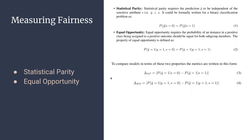The fairness metrics used are statistical parity and equal opportunity. Measuring fairness can be contradicting, so there is no single agreed-upon measure. Statistical parity means the prediction should be independent of the sensitive attribute: P(Ŷ | S=0) = P(Ŷ | S=1). Equal opportunity is more specific to positives: P(Ŷ=1 | Y=1, S=0) = P(Ŷ=1 | Y=1, S=1). Models are compared by the delta of these metrics — the less, the better.